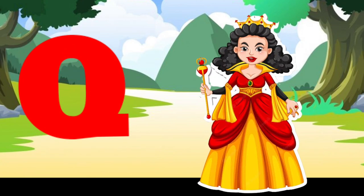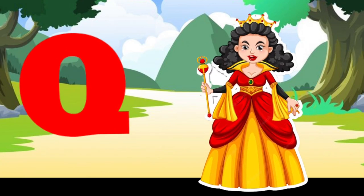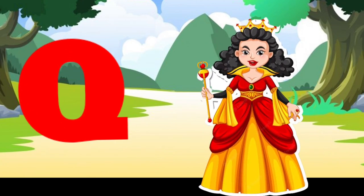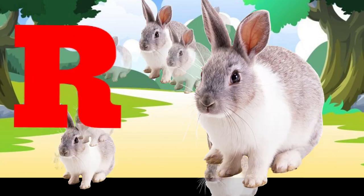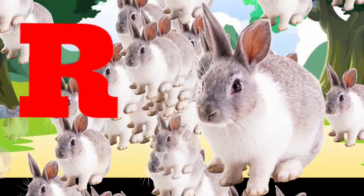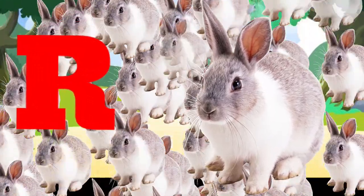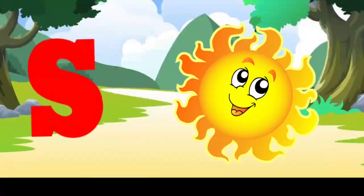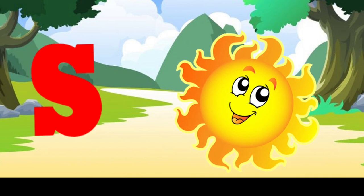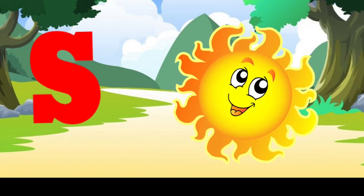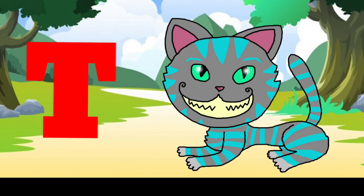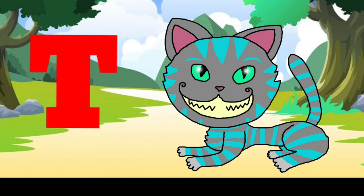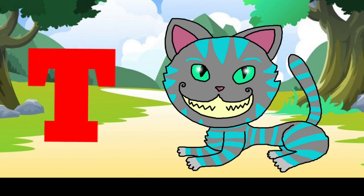Q is for queen, q-q-queen. R is for rabbit, r-r-rabbit. S is for sun, s-s-sun. T is for toad, t-t-toad.